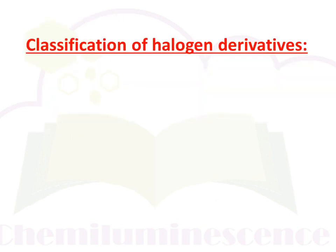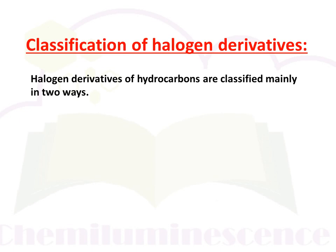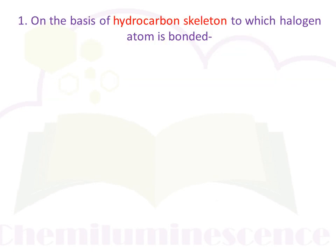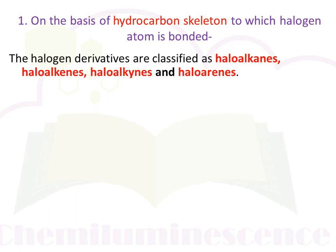Next is the classification of halogen derivatives. Halogen derivatives are classified mainly in two ways. The first is on the basis of the hydrocarbon skeleton to which the halogen atom is bonded — whether it is a single carbon chain, a double bonded chain, a triple bonded chain, or whether it contains an aromatic ring. On this basis, halogen derivatives are classified as haloalkanes, haloalkenes, haloalkynes, and haloarenes.